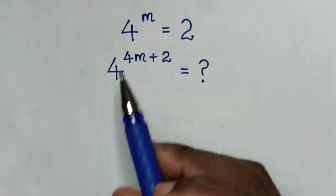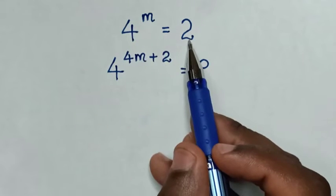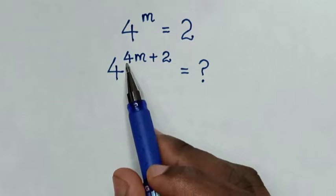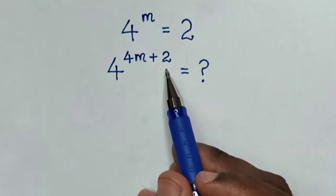Hello! How to solve: 4 power of m is equal to 2. Find the value of 4 power of 4m plus 2.